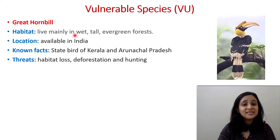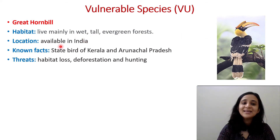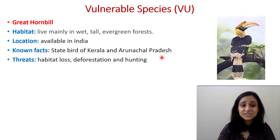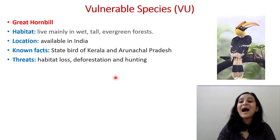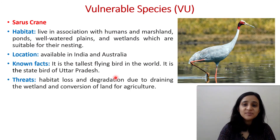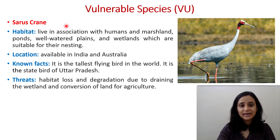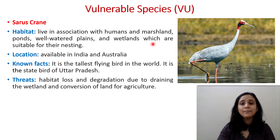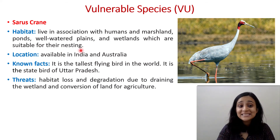Now I will explain Vulnerable species. The first is the Great Hornbill, which lives mainly in wet tall evergreen forests, located in India. It is the state bird of both Kerala and Arunachal Pradesh. Threats include habitat loss, deforestation, and hunting.